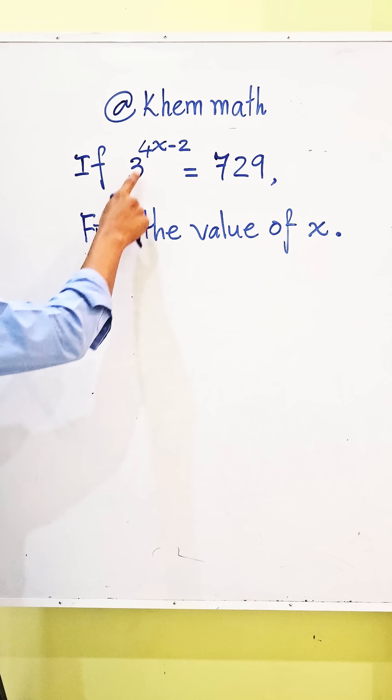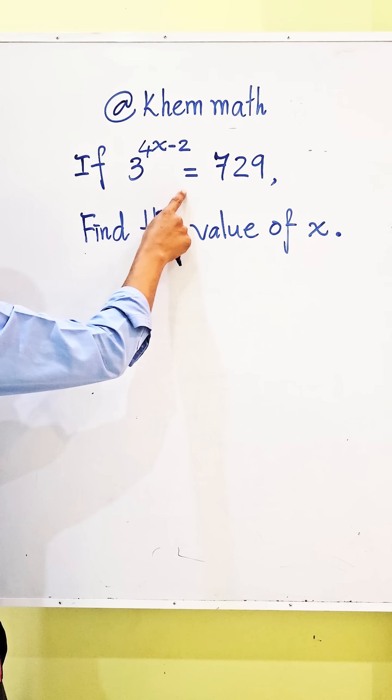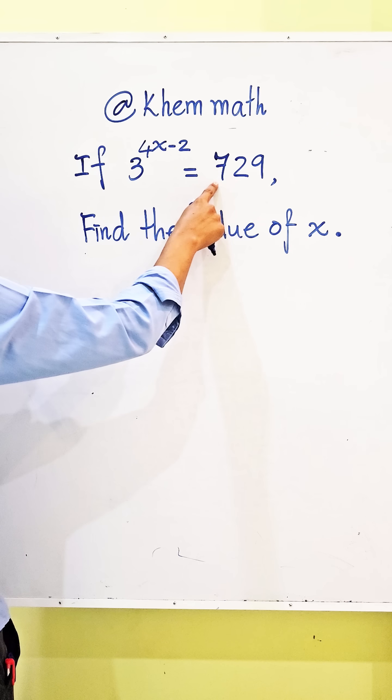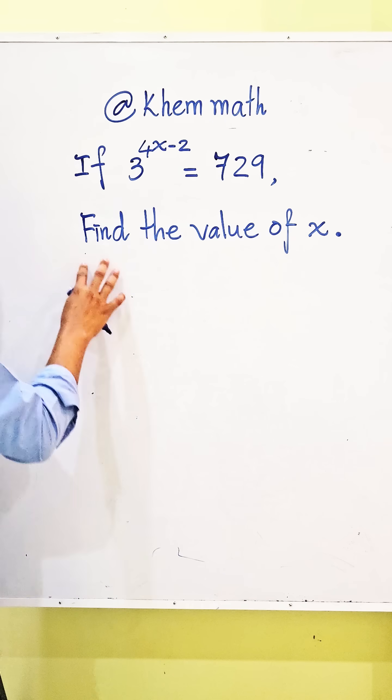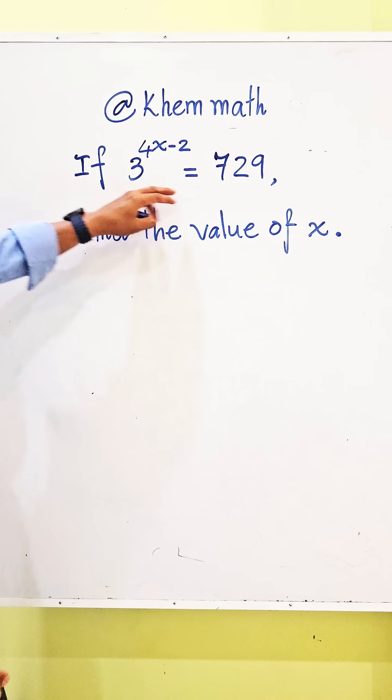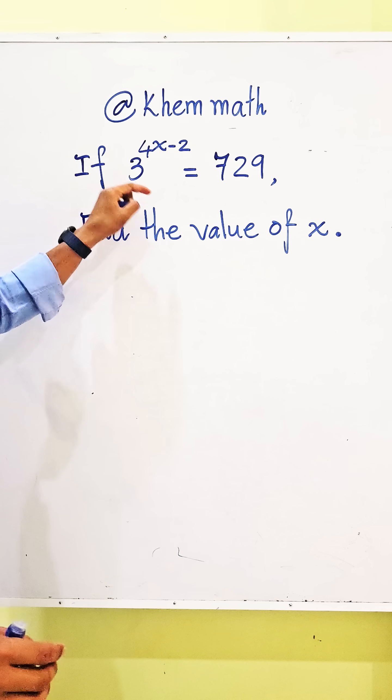If 3 power 4x minus 2 equals 729, find the value of x. Here is the exponential equation. So we want to solve this.